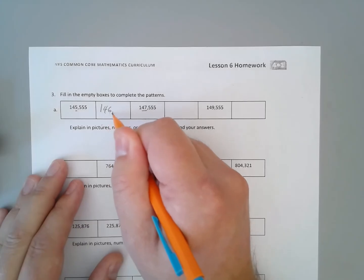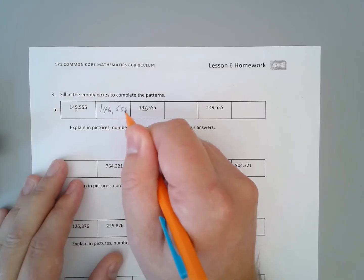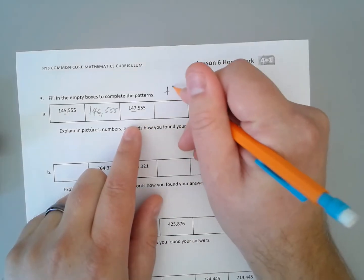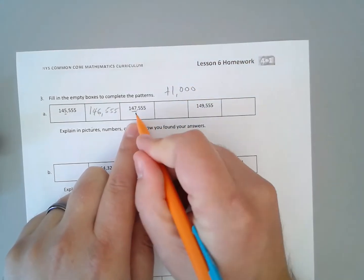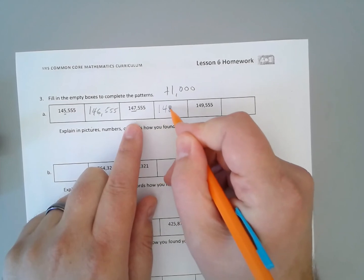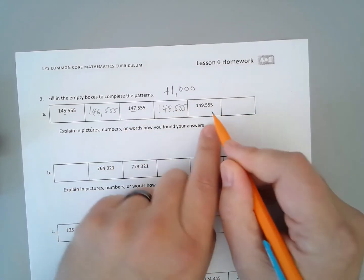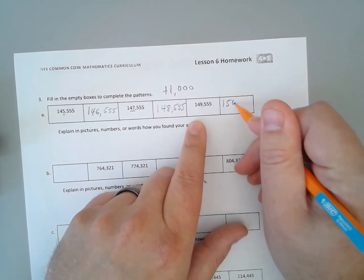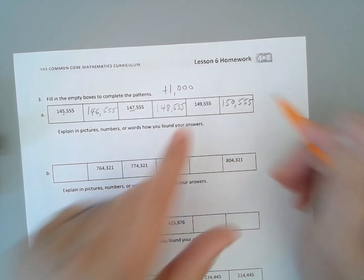So this one here would be 146,555. And if we continue the pattern, we're adding 1,000. So 148,555. And then here, this will become 150,555.